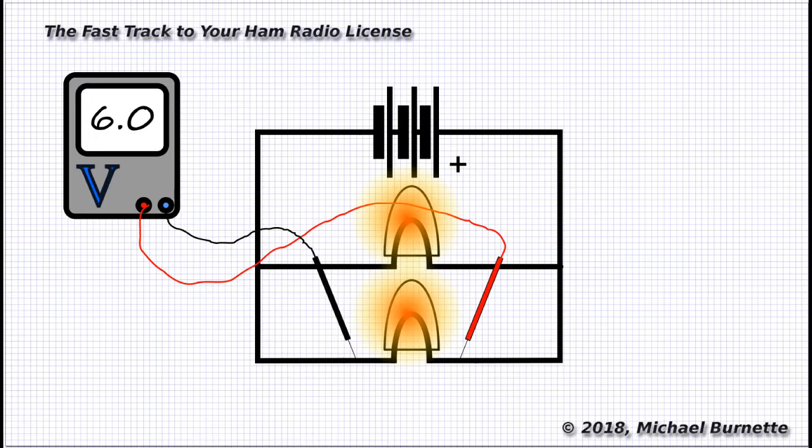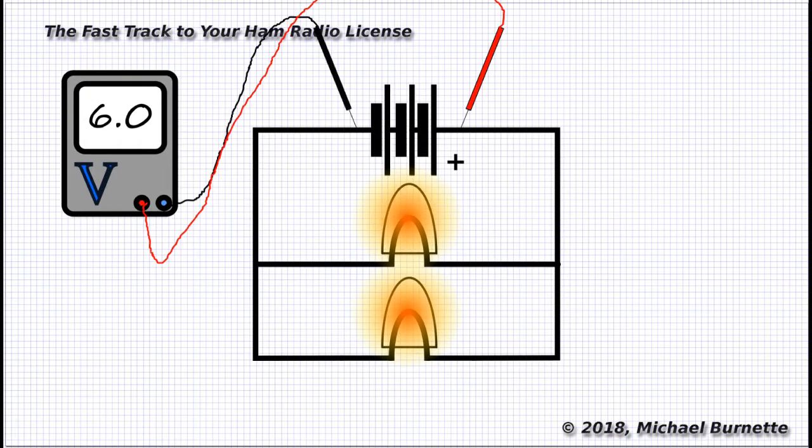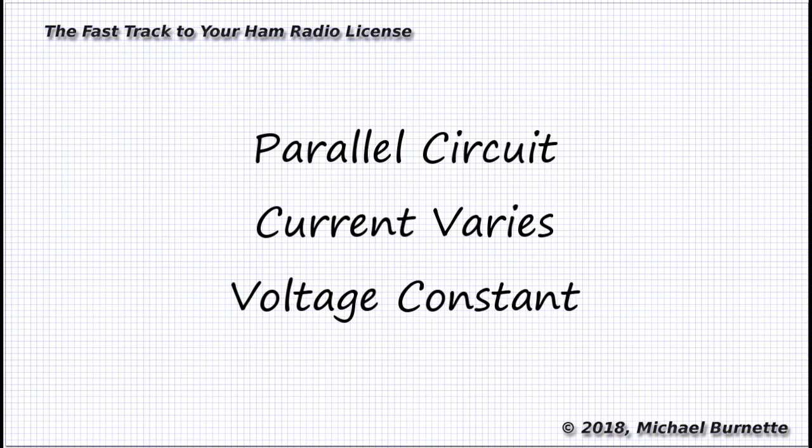In a parallel circuit, the voltage is the same across all legs of the circuit, while the current may be different in different parts of the circuit, depending on the values of the components.